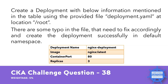CKA challenge question 38 — this question has a weightage of 5%. Create a deployment with the information mentioned in the table using the provided file deployment.yaml at location /root. There are some typos in the file that need to be fixed. The deployment name is nginx-deployment, image is nginx with the latest tag, container port 80, and replicas 3.